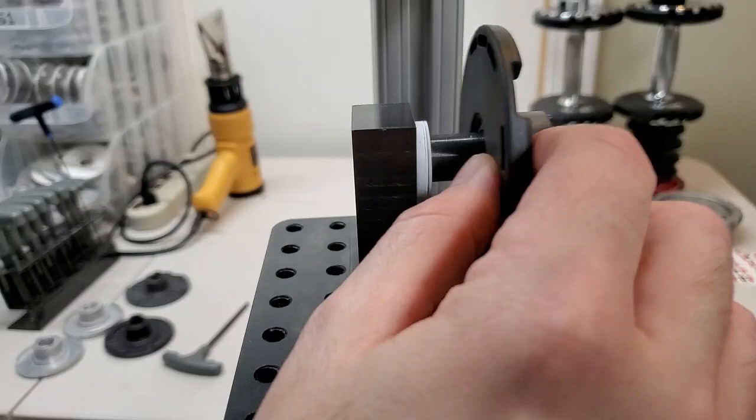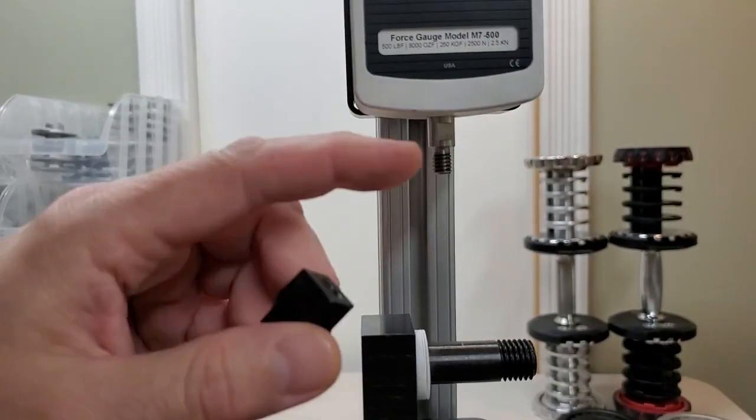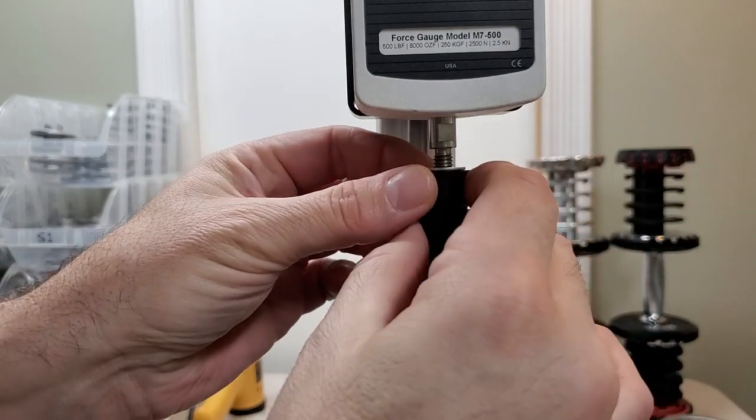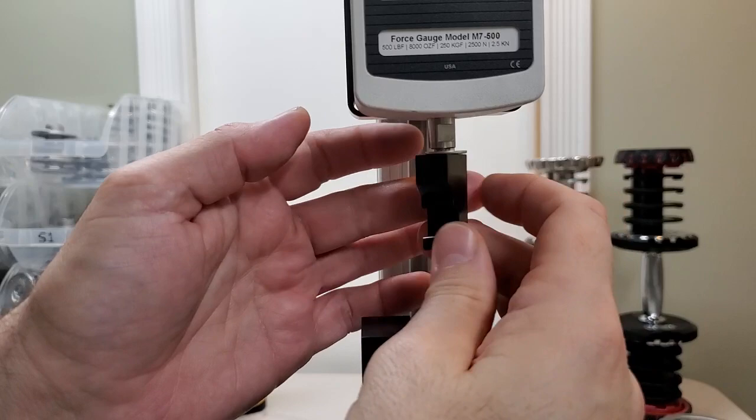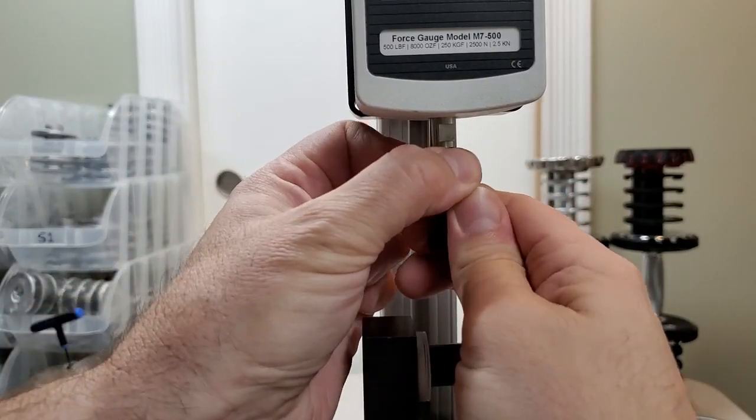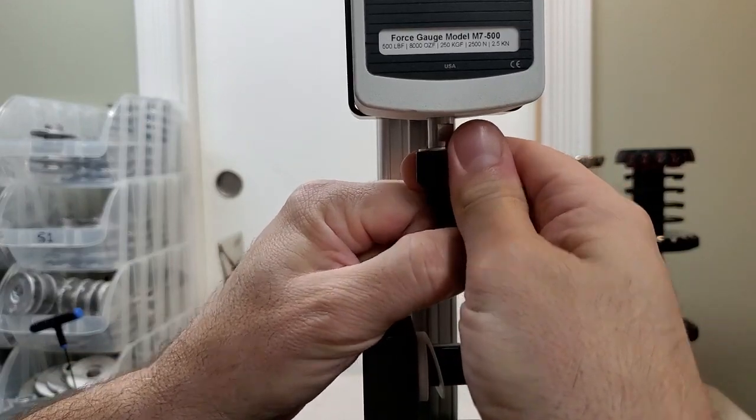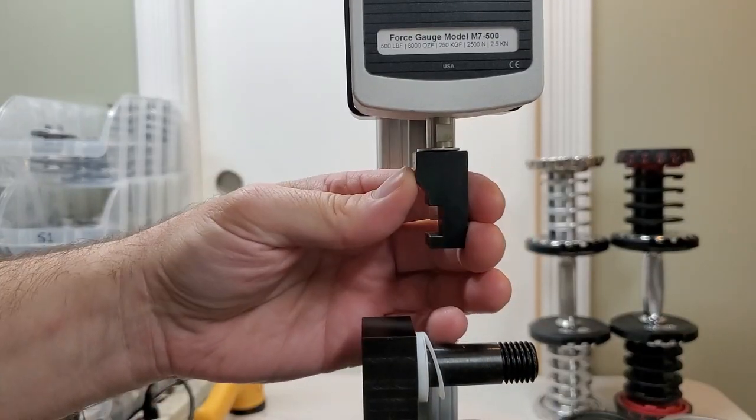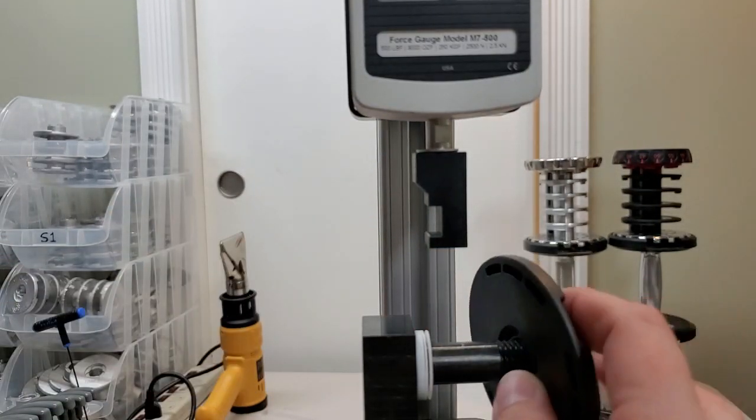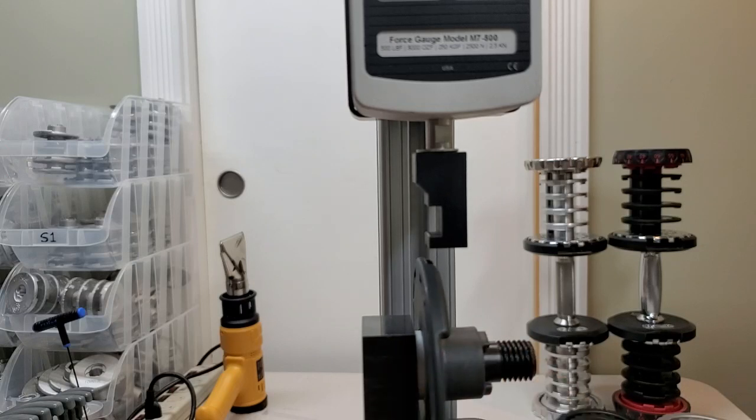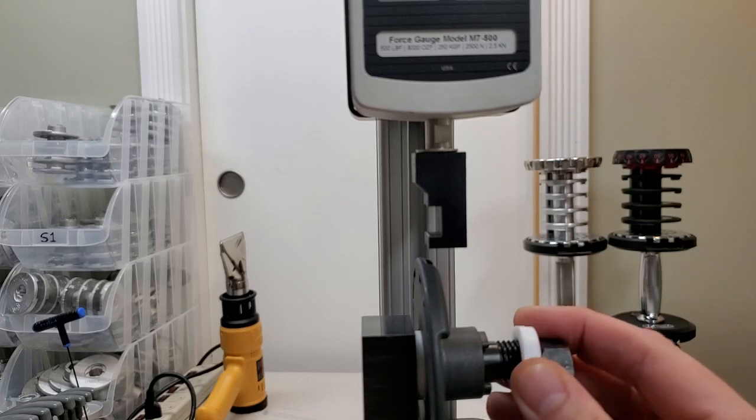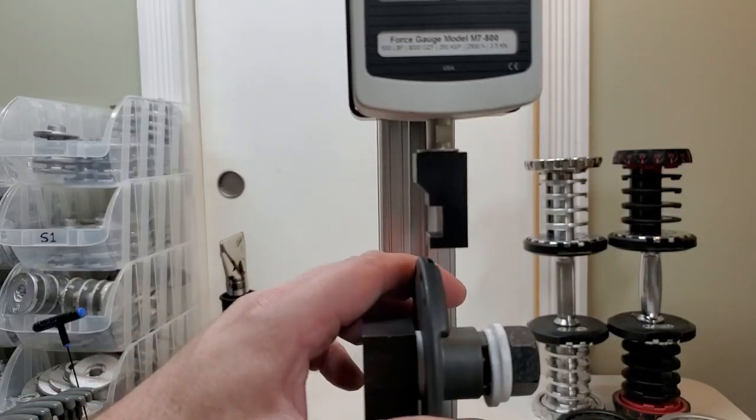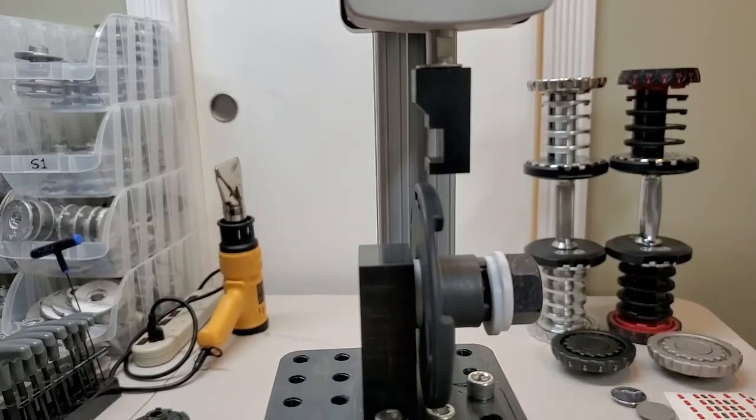So what we're going to do is first mount our piece here on the force gauge. So our part is mounted. Now we're going to place a disc on the shaft. Let me adjust this so you can see it a little better.